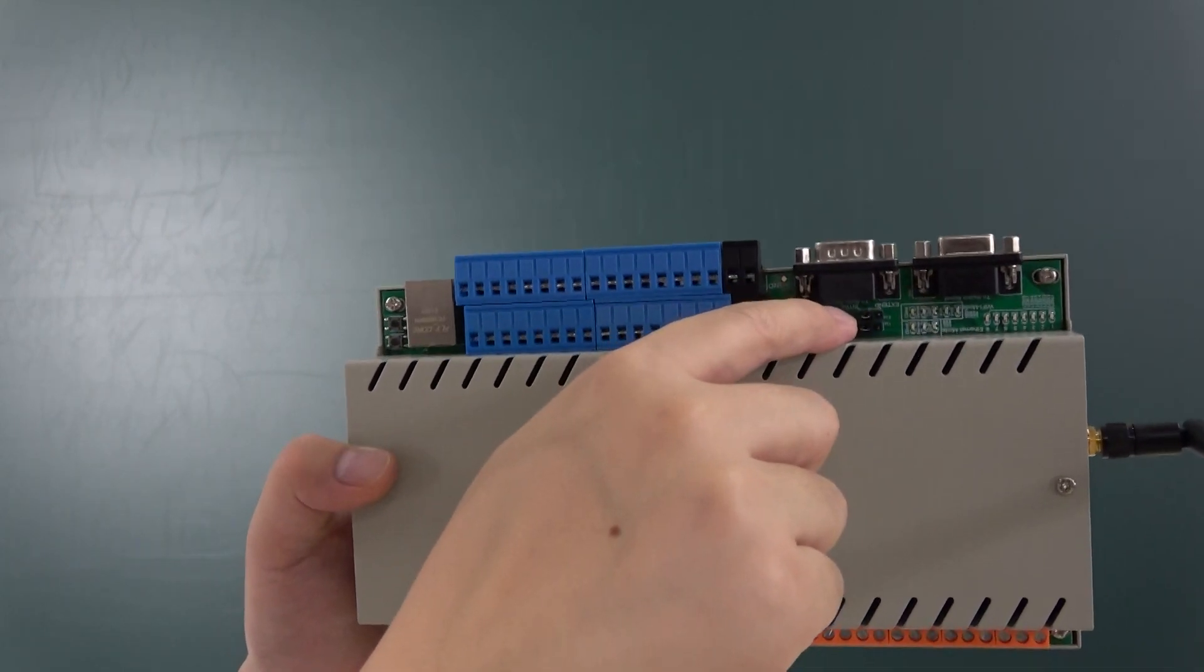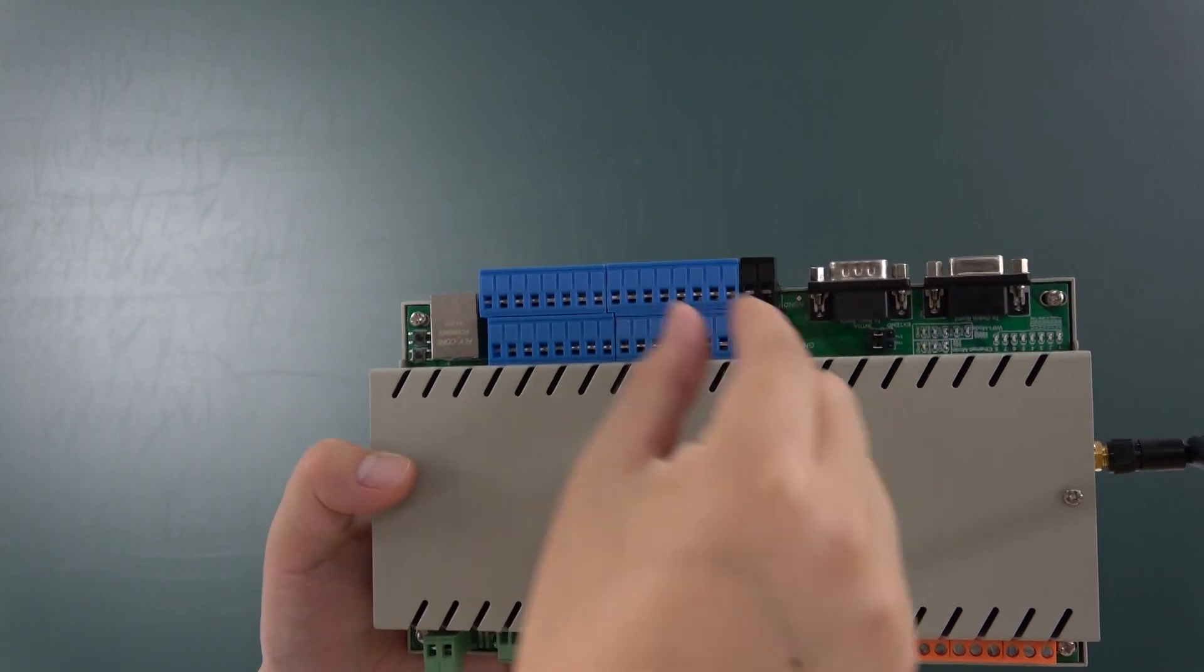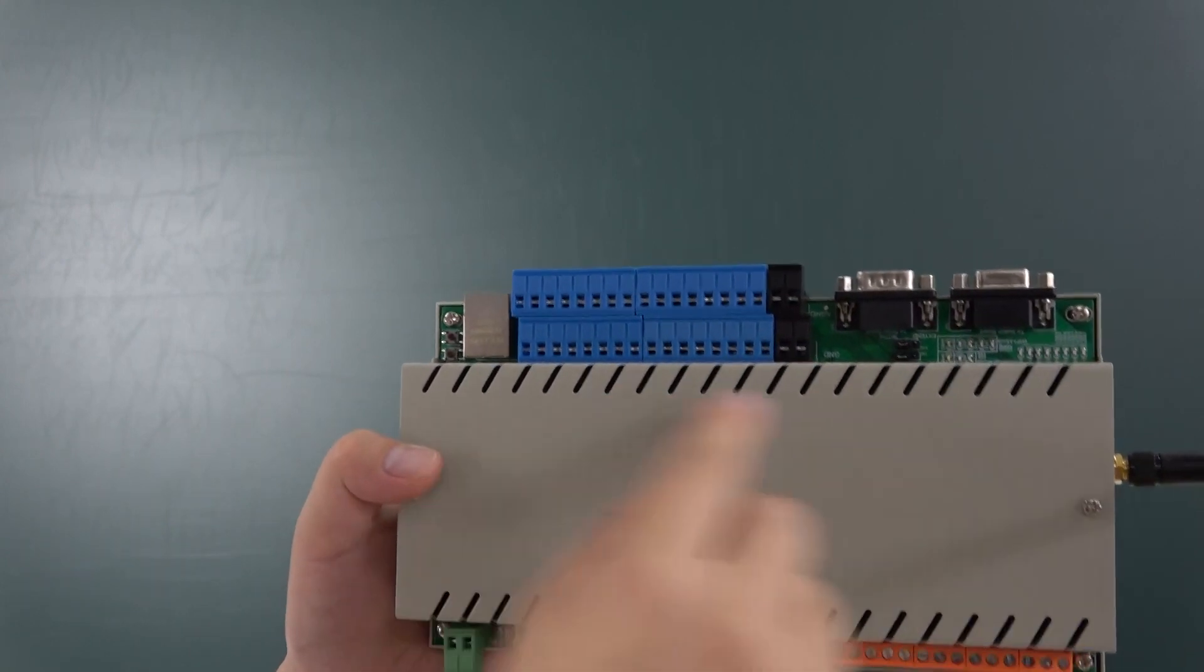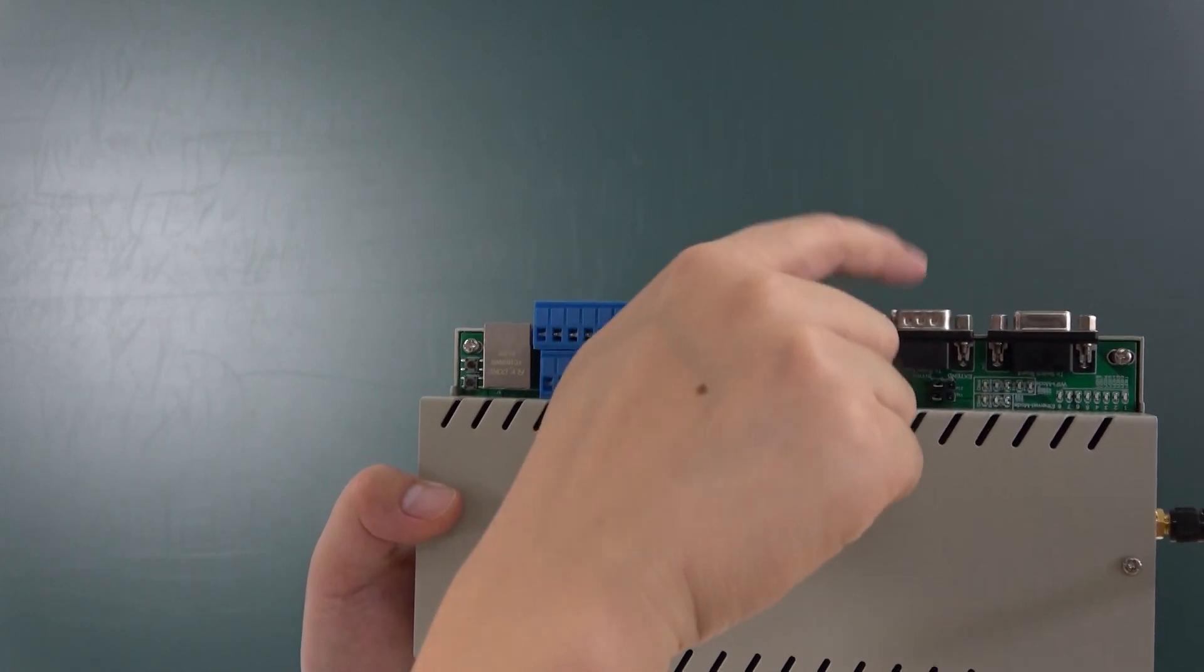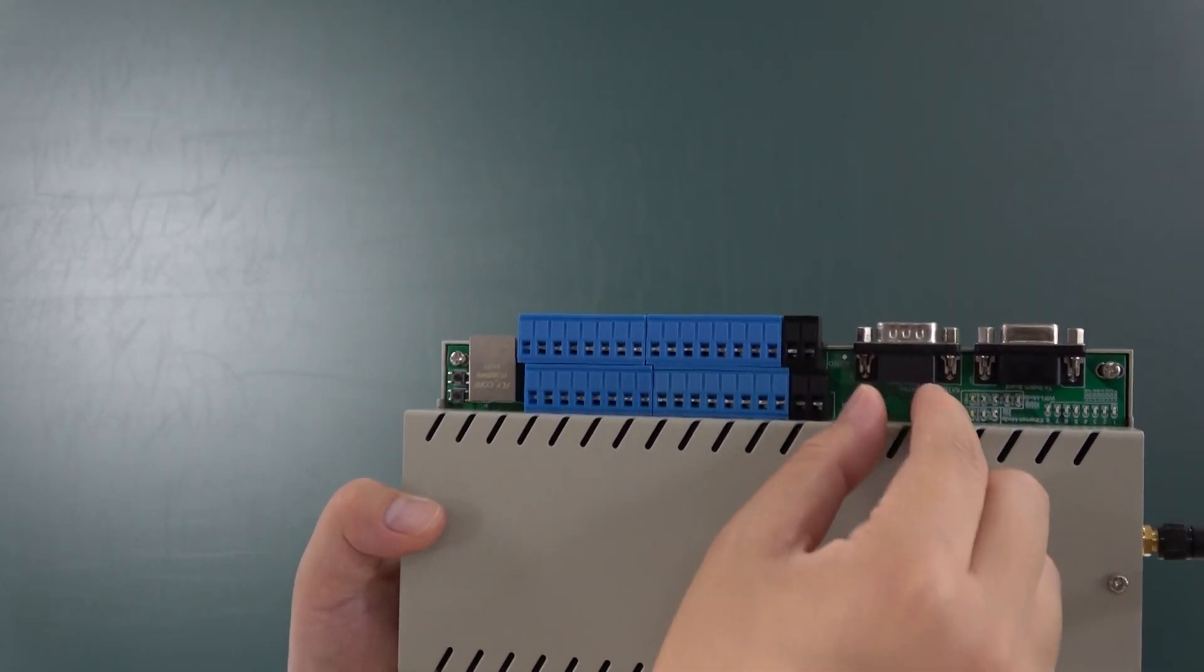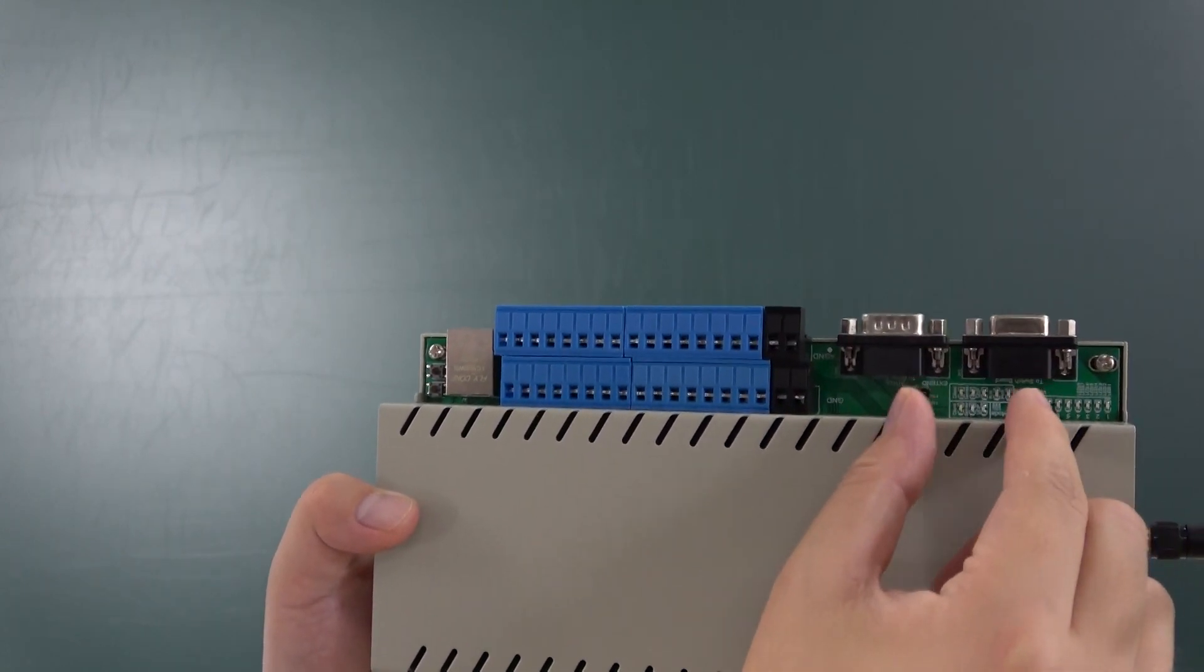And this is a jumper. This jumper on the left is for internal relay. And if you want to extend the relay connected with RS-232, just put the jumper to the right position.